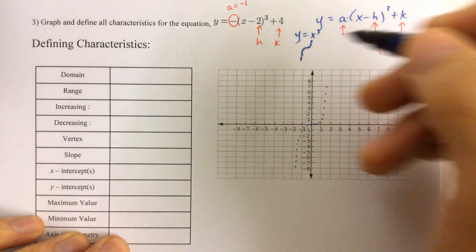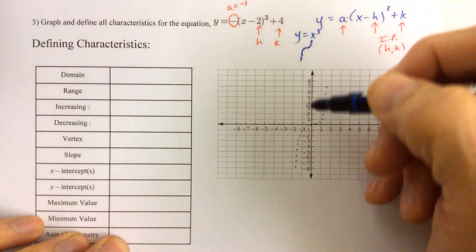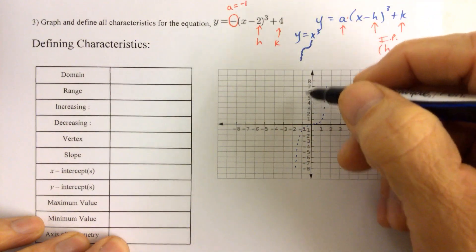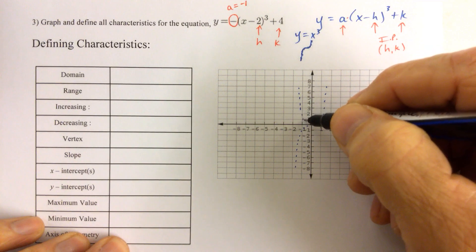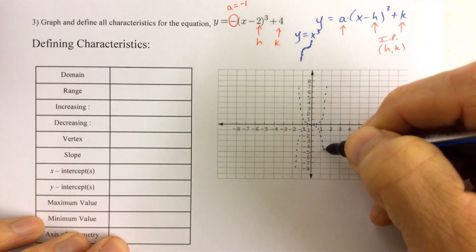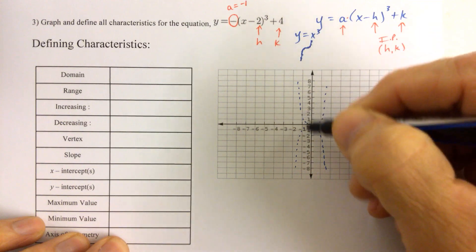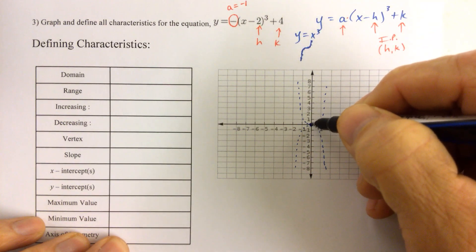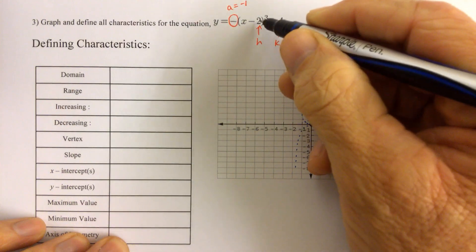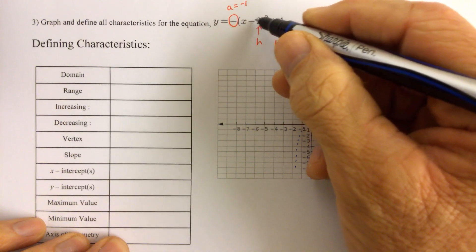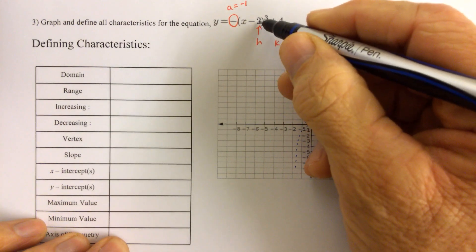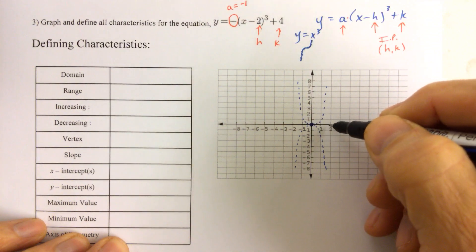If the a value is negative, that means I'm going to flip it over the x-axis. It's a reflection. It's going to ultimately decrease from left to right instead of increasing. Then the inflection point didn't change, but now I want to move it two to the right. x minus two means h is two, and we move two to the right, so we go one, two.